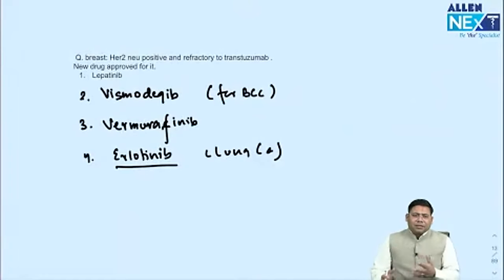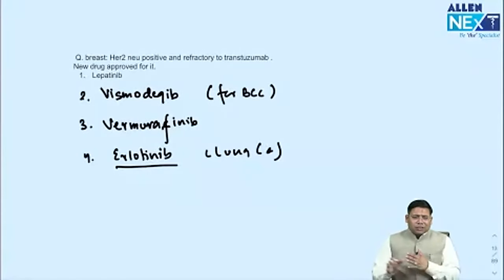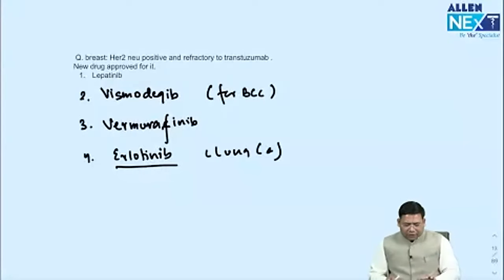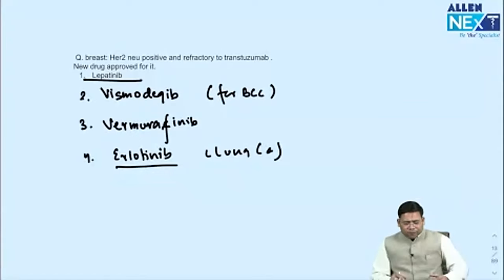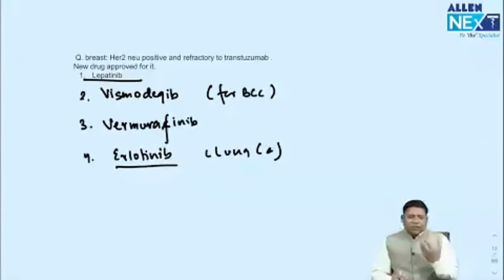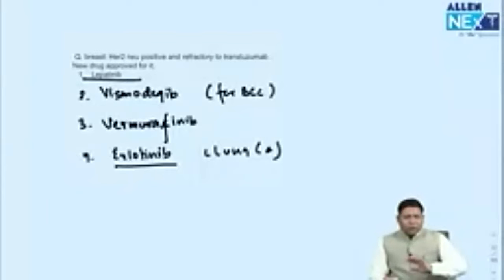Breast cancer management question: which is the second-line treatment if trastuzumab (Herceptin) is resistant? The answer involves lapatinib — a drug used for trastuzumab-resistant patients. Other targeted drugs mentioned include vismodegib for basal cell cancer, erlotinib for lung cancer, vemurafenib, sorafenib for liver cancers and RCCs. Pharmacology faculty will discuss this question in detail.